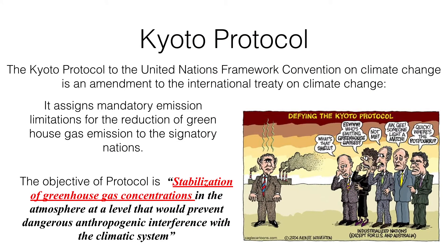The Kyoto Protocol is the initiative of the United Nations Framework Convention on Climate Change. It is an amendment to the international treaty on Climate Change, and it assigns mandatory emission limitations for the reduction of greenhouse gas emissions to the signatory nations. The objective of the Protocol is the stabilization of greenhouse gas concentration in the atmosphere at a level that would prevent dangerous effects on the climatic system.